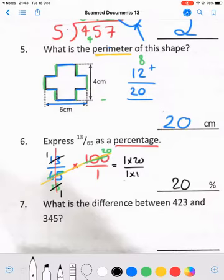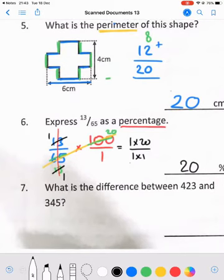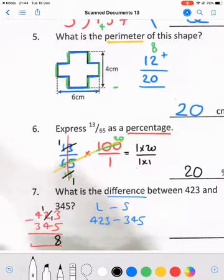Question number seven: What is the difference between 423 and 345? The word difference means the largest number minus the smallest number. So we're going to do 423 minus 345. Using the traditional method: 3 from 13 is 8, we borrow so 11 take 4 is 7. That gives you 78.